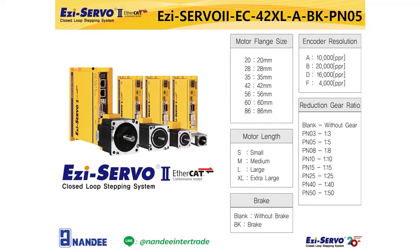You can select the motor from a NEMA 8, 20 millimeters size motor, to a NEMA 34, 86 millimeters size motor. Motor length is the length of the motor body excluding the motor shaft, and you can select small, medium, large, and extra large length. The length you can select depends on the motor size. The encoder resolution can also be selected as shown in the table.